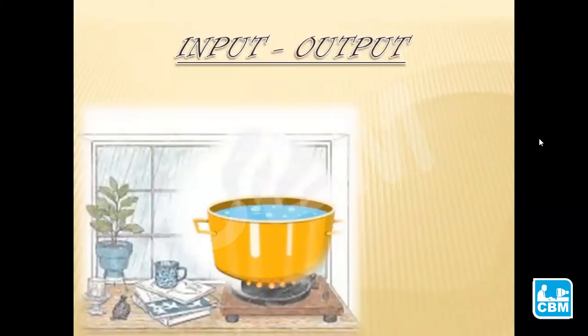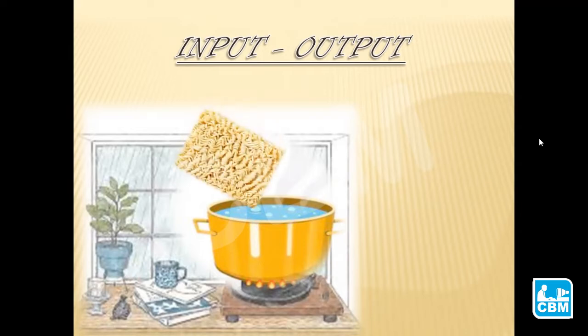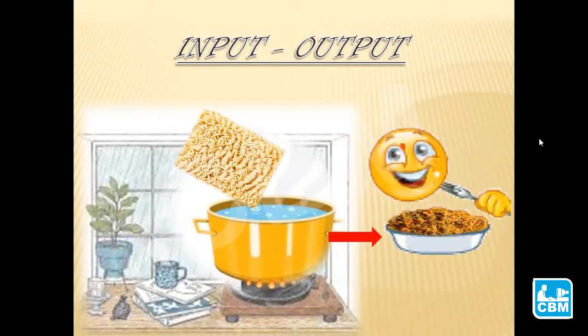Let's first understand what is input and output in a simple way. Do you like noodles? Have you ever tried making it on your own? The recipe that you need to follow for making noodles is a set of instructions on what to do, how to do and when to do it. The set of instructions uses ingredients which act as inputs. The uncooked noodles along with vegetables and tastemaker are the inputs which are put into the vessel containing boiling water. The boiling is nothing but the processing of our input. After the processing is done, your delicious noodles are ready, which is nothing but our output.